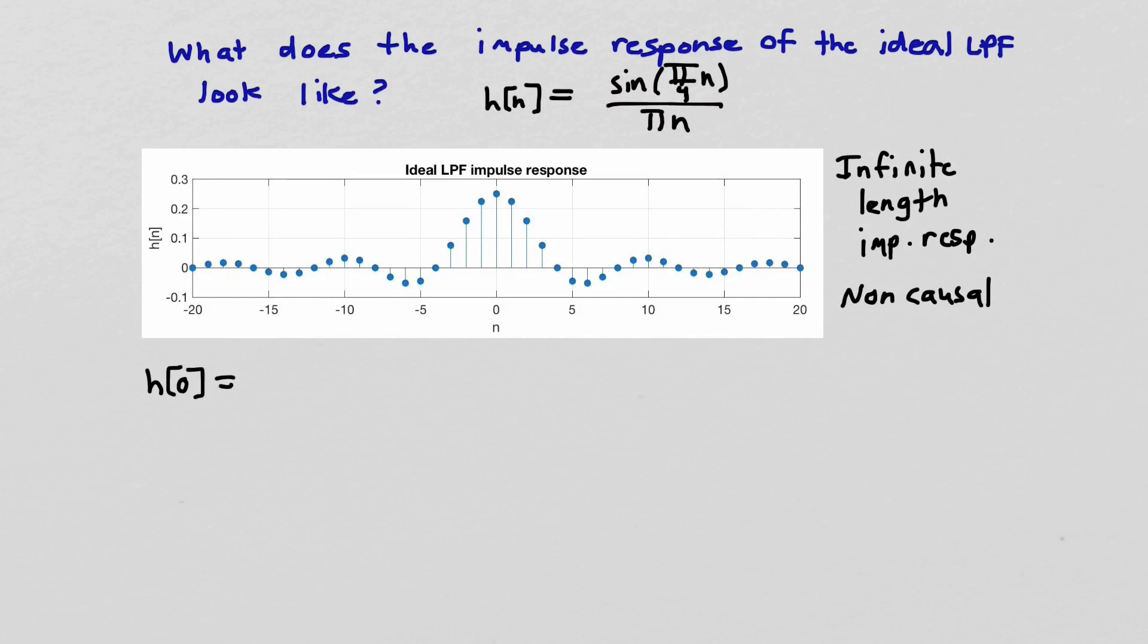At h[0], if we just plug into the formula, we would get sin(0) over π times 0. Well, that would be 0 over 0, which is an indeterminate form. So we have to do something extra to get the value there. And we have to, in fact, use L'Hopital's rule to figure out what the value is going to be at 0.